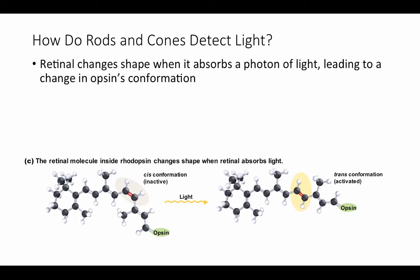So how do rods and cones detect light? It has to do with this retinol pigment protein. Retinol changes shape when it absorbs a photon of light, leading to a change in opsin's conformation. Going back to the very beginning of the course when we were talking about saturated versus unsaturated fatty acids, we introduced the idea of cis and trans isomers — structural isomers where one carbon-carbon double bond is just flipped and reversed in the inactive version compared to the active version. You can see how the arrangement of hydrogen atoms around this double bond changes, altering the shape of the molecule.